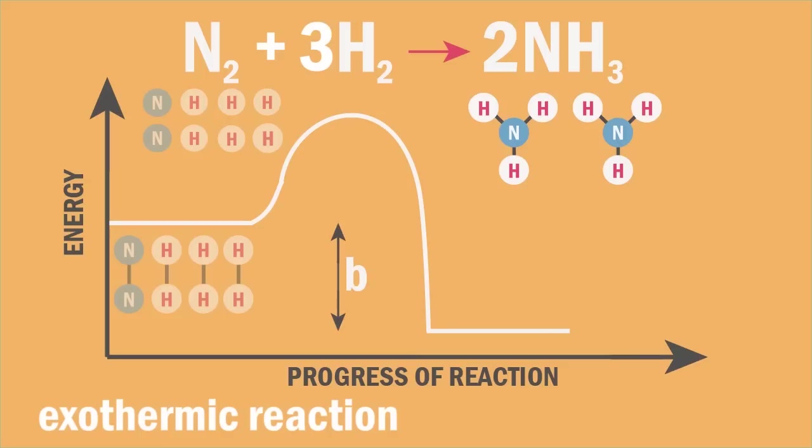And B is the net energy given out during the reaction, delta H, which is the energy difference between the energy taken in to break the bonds in the reactants and the energy given out when the new bonds make to form the products.